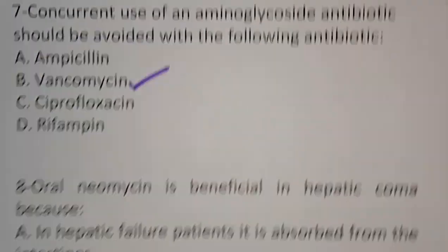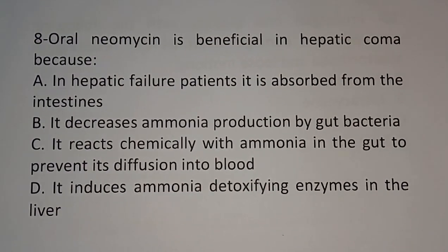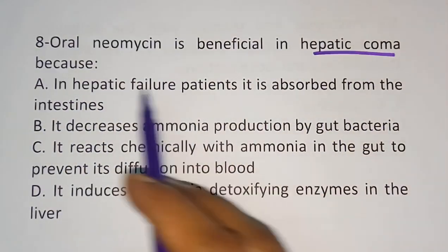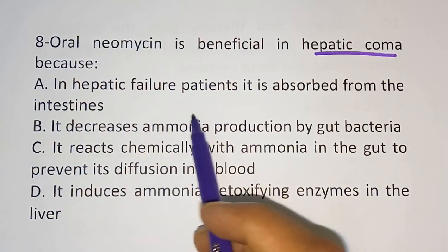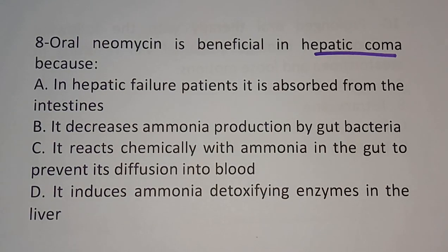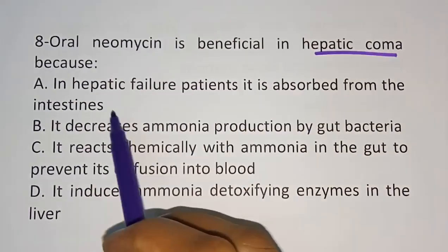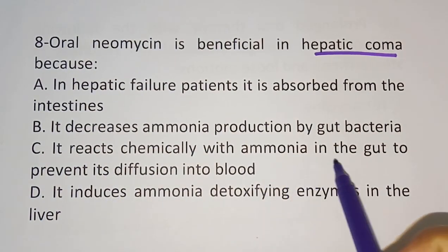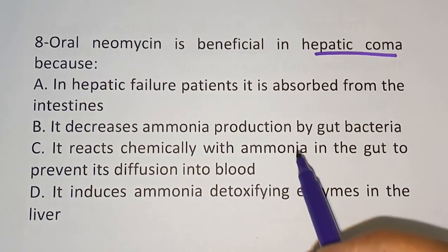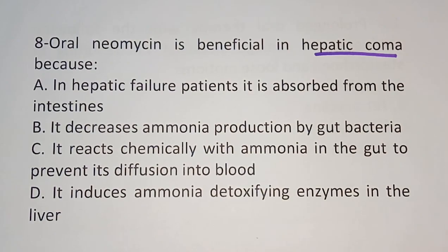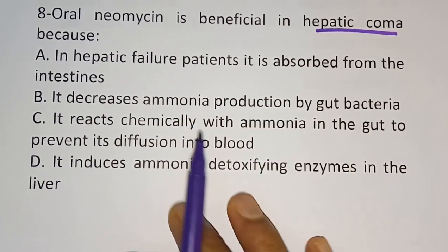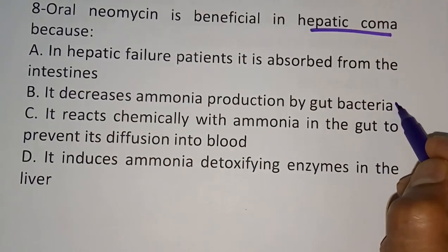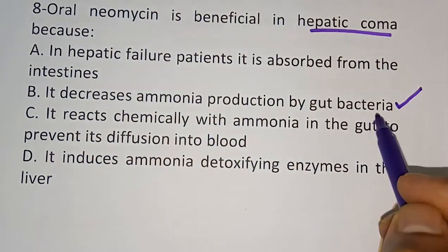Question 8: Oral neomycin is beneficial in hepatic coma because — Option A: it is absorbed from the intestine; Option B: it decreases ammonia production by gut bacteria; Option C: it reacts chemically with ammonia in the gut to prevent its diffusion into blood; Option D: it induces ammonia-detoxifying enzymes in the liver. The correct answer is Option B — it decreases ammonia production by gut bacteria.